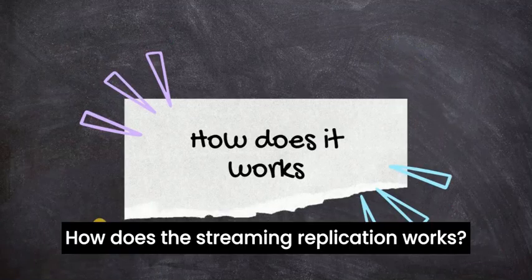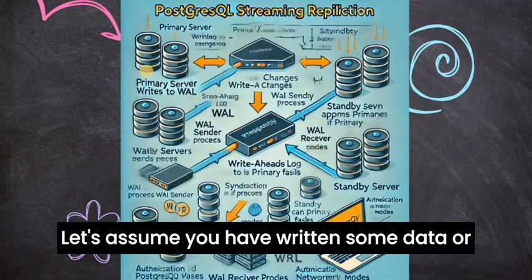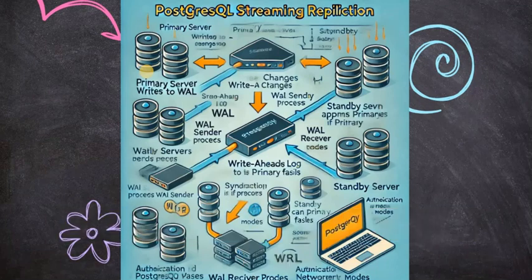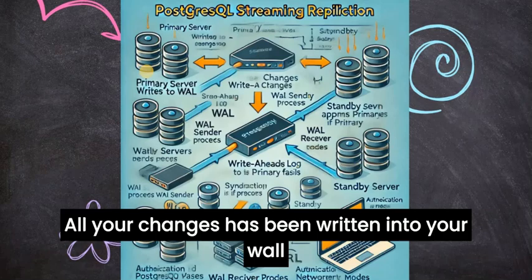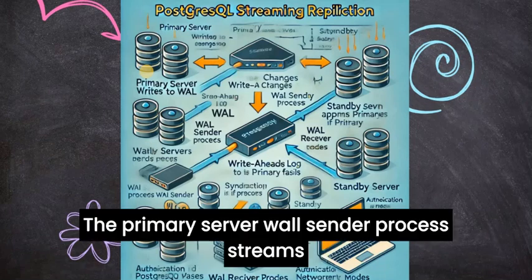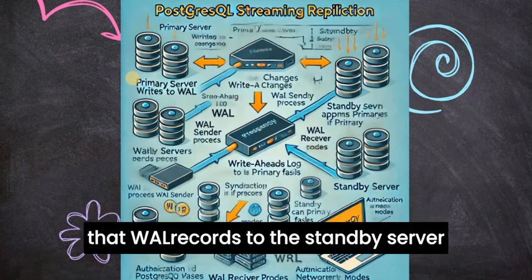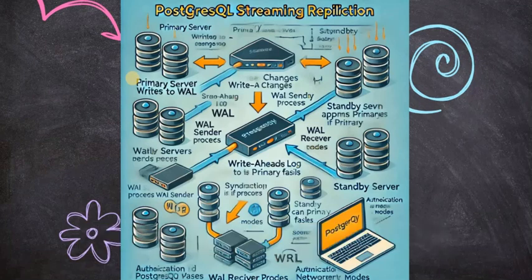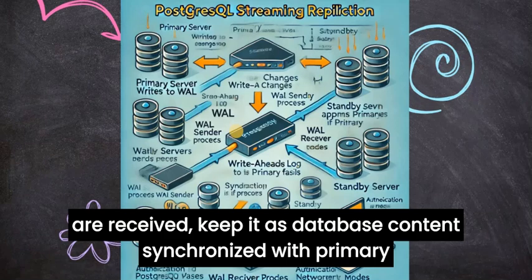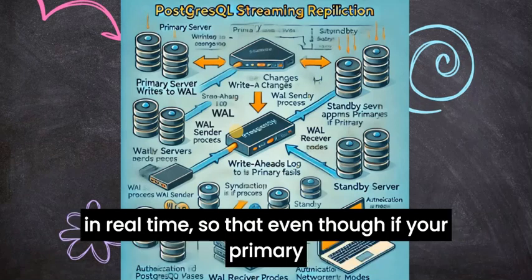How does streaming replication work? Let's assume you have written some data or made some changes on your production site. All your changes are written into your WAL files, which contain all your data modifications. The primary server's WAL sender process streams those WAL records to the standby server's WAL receiver, which keeps the database content synchronized with the primary in real time.